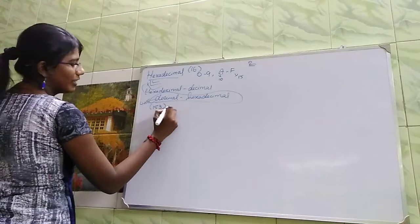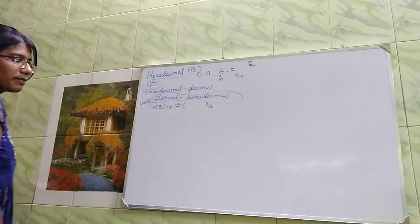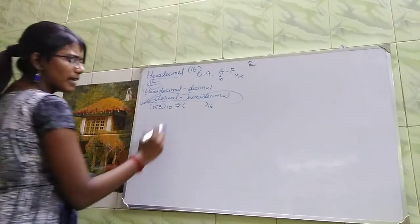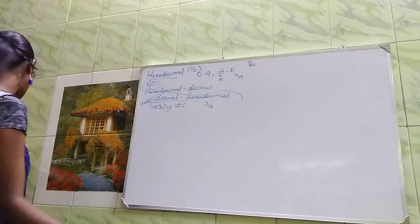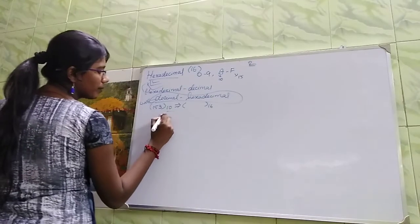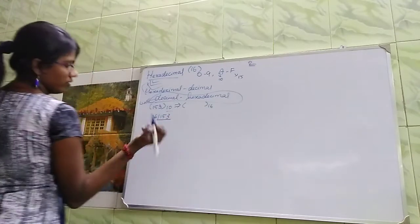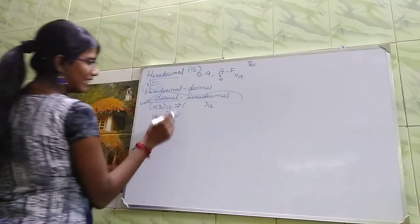We have hexadecimal. 153 of 10. Converting base 10 decimal to hexadecimal. OK, 153—I have to divide by 16.